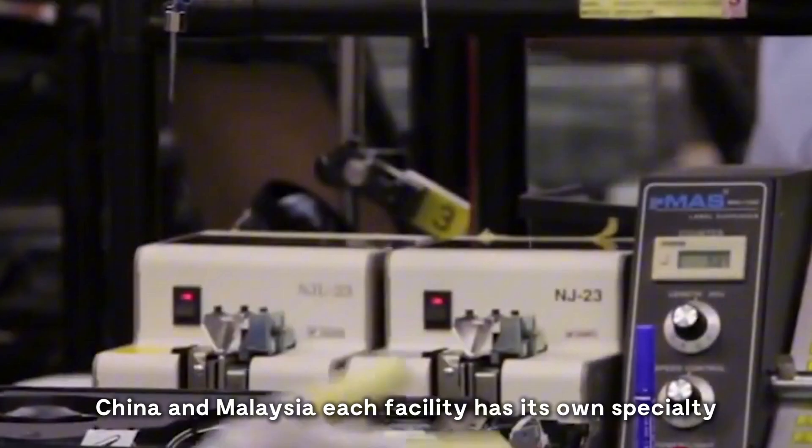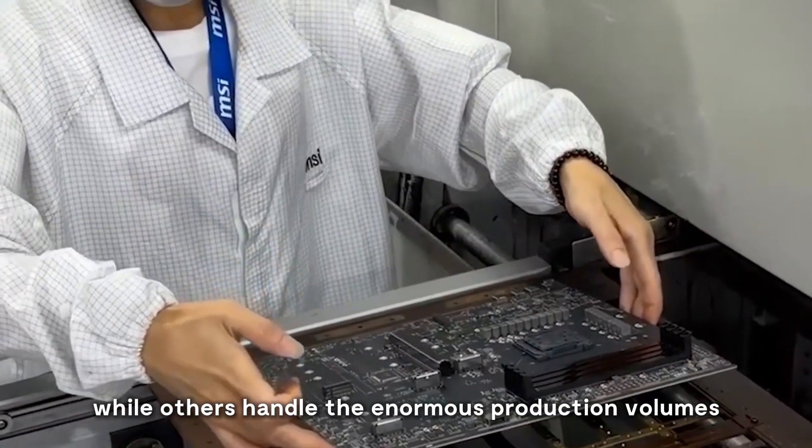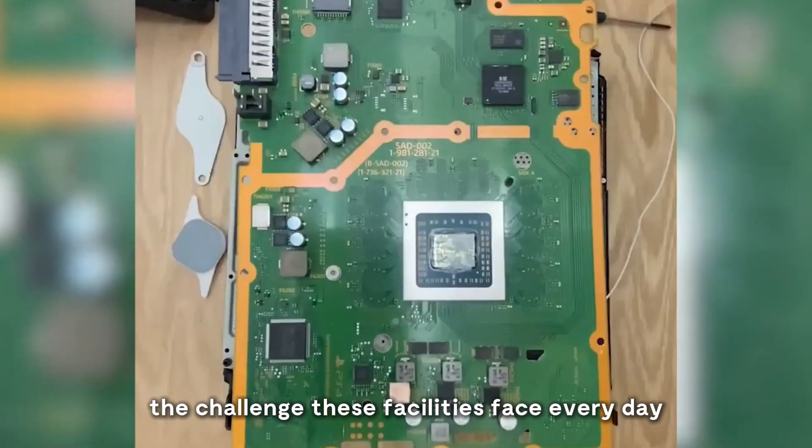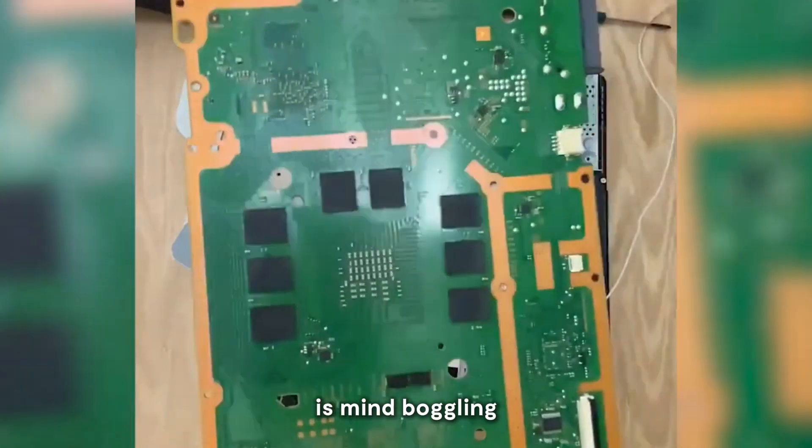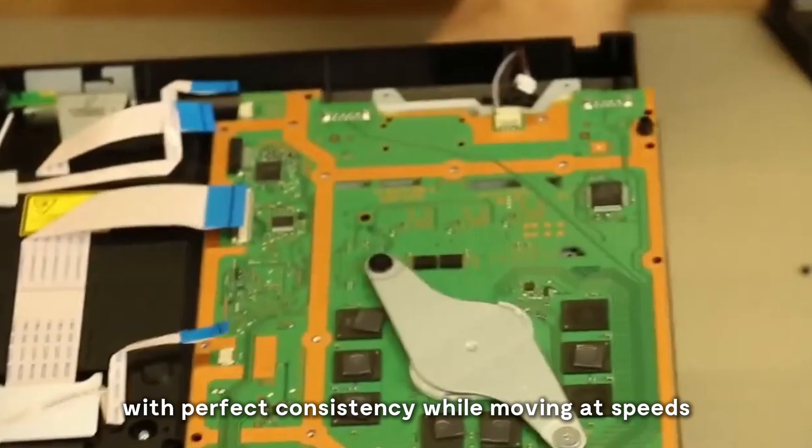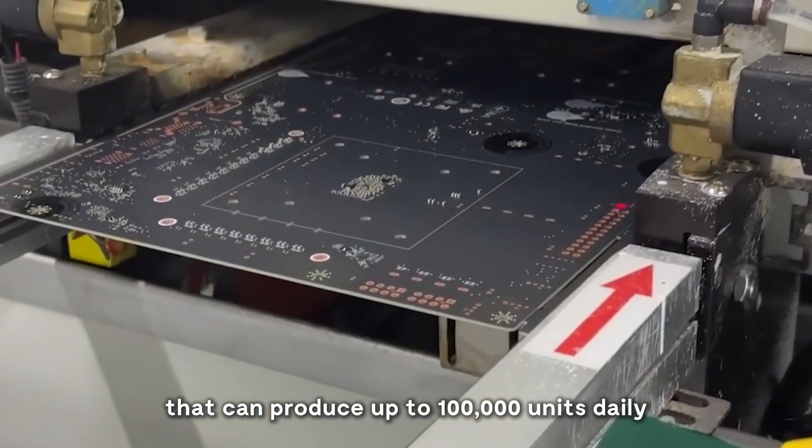Each facility has its own specialty, with some focused on specific PlayStation models, while others handle the enormous production volumes needed to meet global demand. The challenge these facilities face every day is mind-boggling. How do you create millions of identical consoles with perfect consistency while moving at speeds that can produce up to 100,000 units daily?